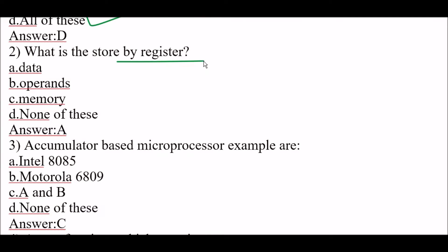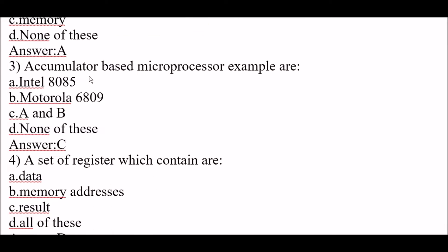Next question: what is stored by a register? Option A: data. Option B: operands. Option C: memory. The right answer is option A, data. Data is stored by the register. Next question: examples of accumulator-based microprocessors are Intel 8085 and Motorola 6809.